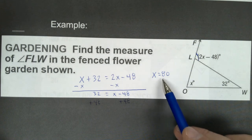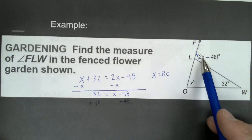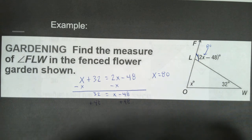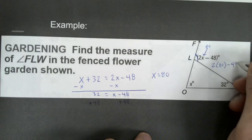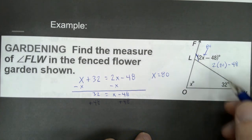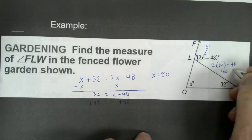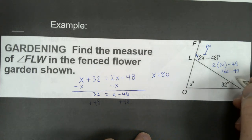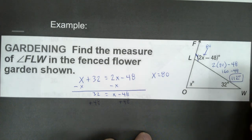Now they're not wanting to know what x is—they want to know what angle FLW is. So we're going to substitute 80 in right here for x. So if I do 2 times 80 minus 48, that's going to give me that angle. Well, 2 times 80 is 160, minus 48. And 160 minus 48 would be 112. So FLW would be 112 degrees.